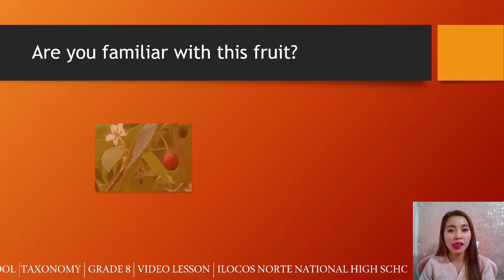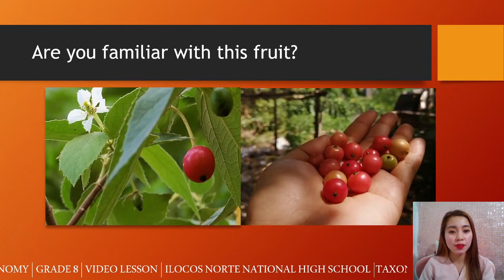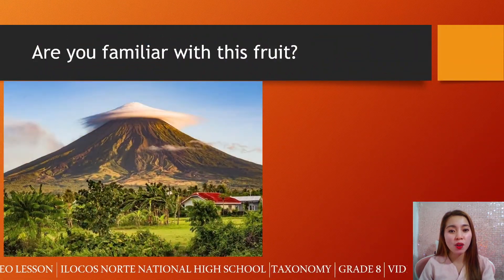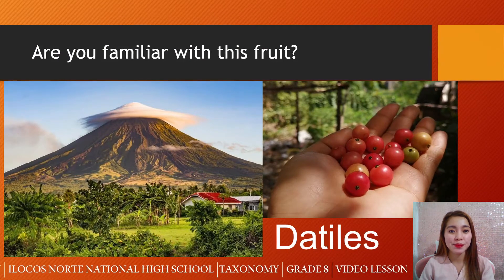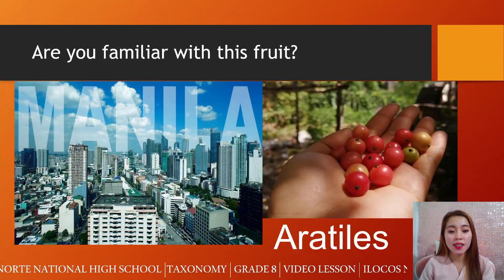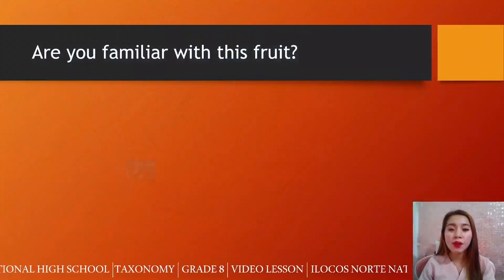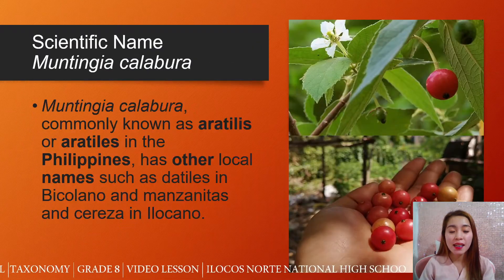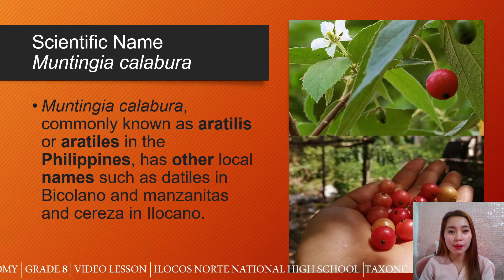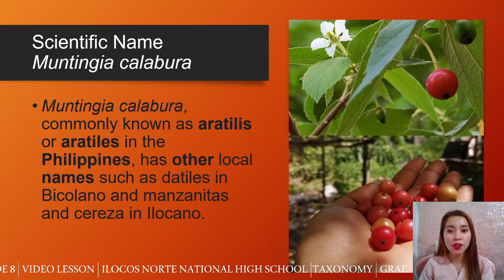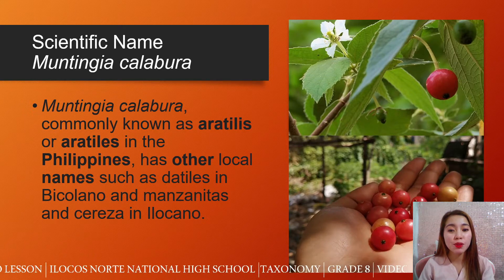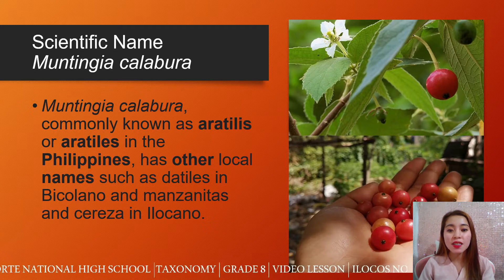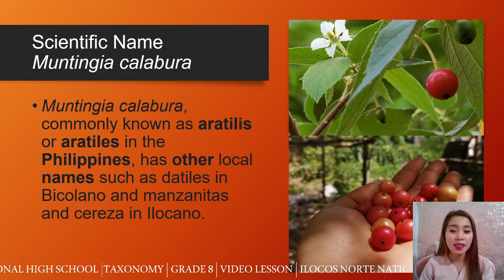So I have a question here. If you are familiar with this fruit — when you are in Bicol, you will call this Datiles. But when you are in Manila, you will call this Aratiles. And of course, when we are in Ilocos, we call this Manzanitas. One fruit having different common names. But the scientific name of this fruit is Muntingia calabura, commonly known as Aratiles, with other local names such as Datiles, Manzanitas, or Cereza.